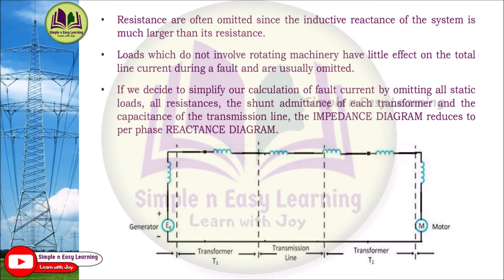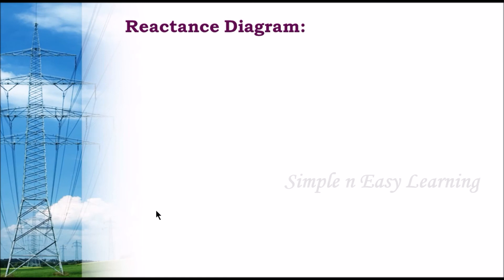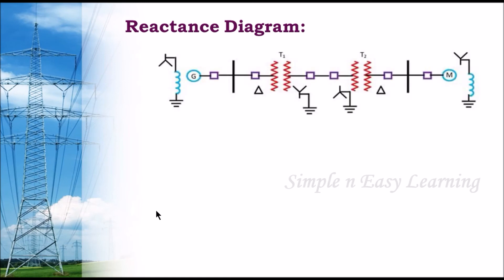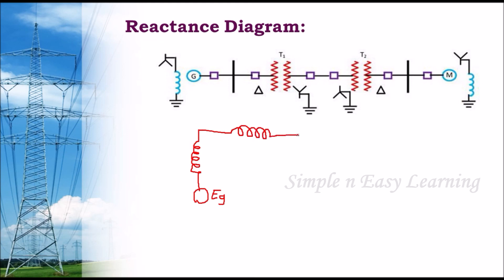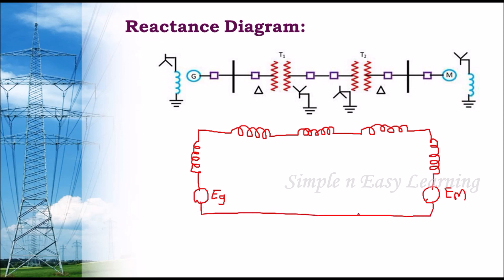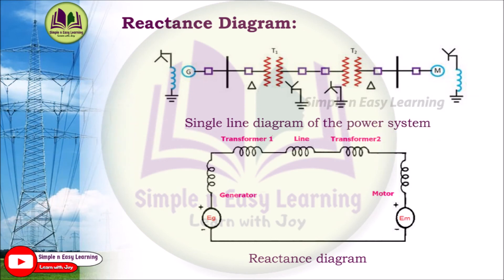The complete impedance diagram is reduced to a per-phase reactance diagram. We can directly draw the reactance diagram by considering all the approximations made. For the same single line diagram, the generator is represented by one reactance and the generated EMF EG; the transformer by one reactance; the transmission line by one reactance; transformer two by one reactance; and the motor by one reactance and motor induced EMF EM. This is the complete reactance diagram of the given circuit.